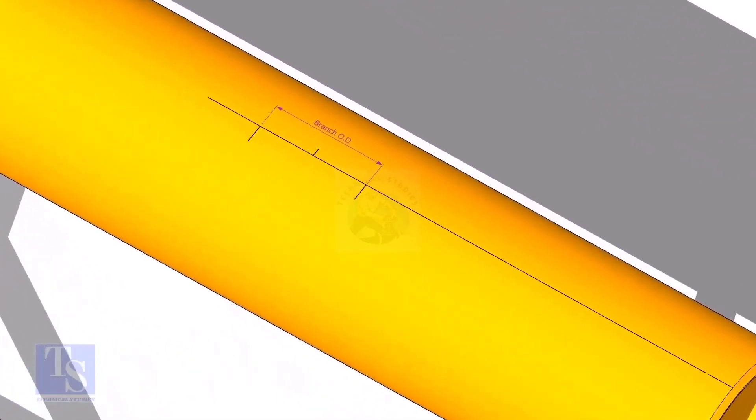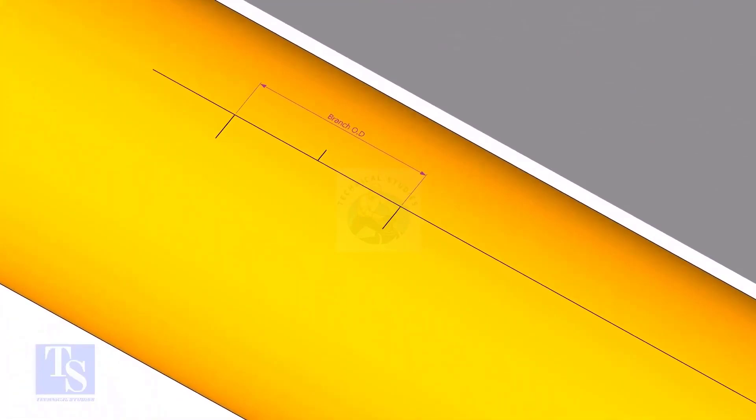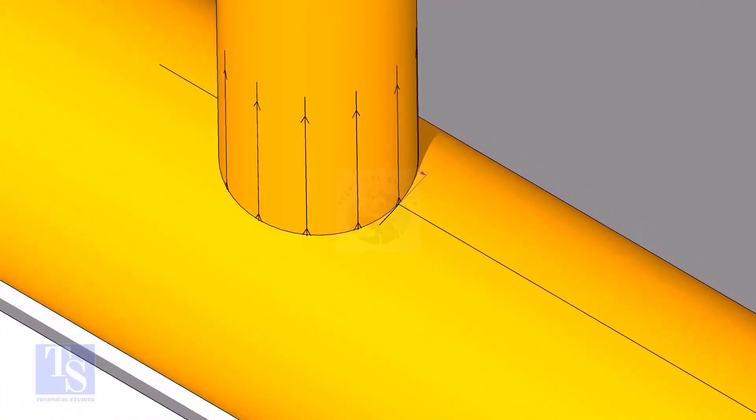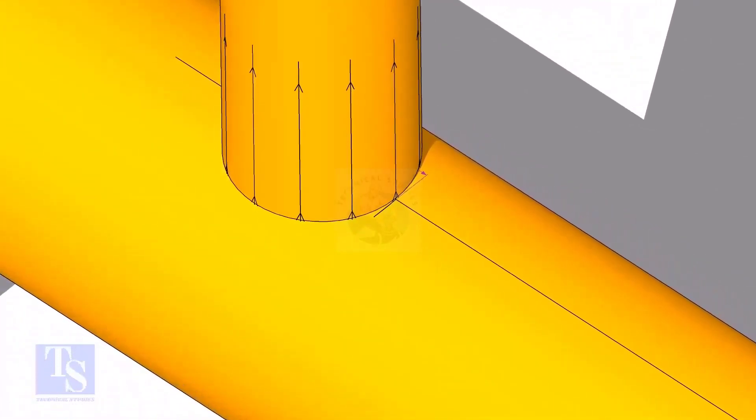Mark the branch OD on the center line of the header. Put the branch exactly on this marking, matching the branch center line.